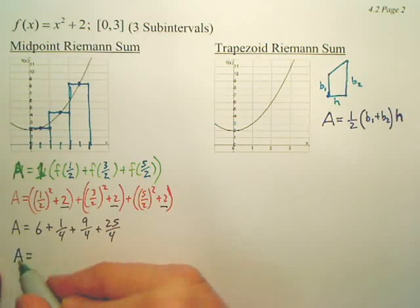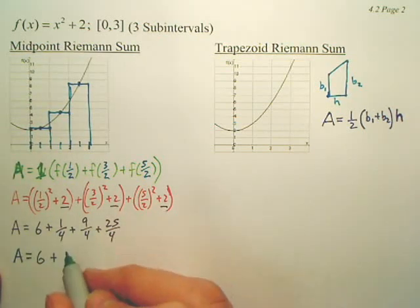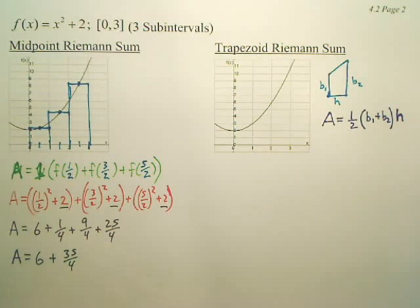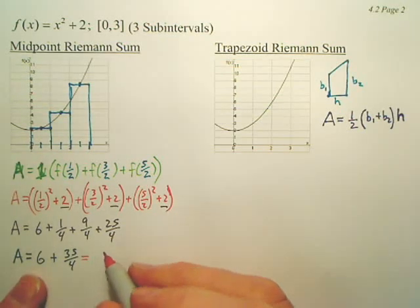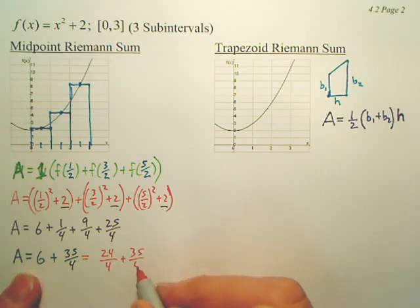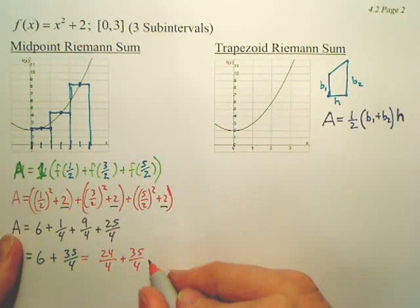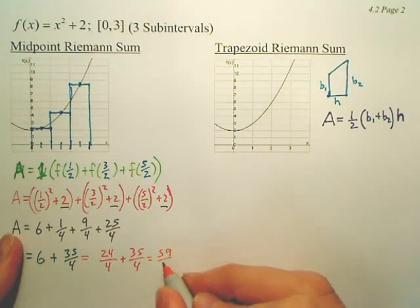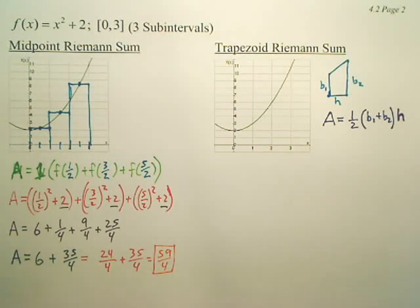So my area is 6 plus 35 fourths. And how do we change 6 to make it fourths? We'll multiply by 4, so it'll be 24 fourths plus 35 fourths. So it looks like we have 59 fourths. That would be the area, units squared.